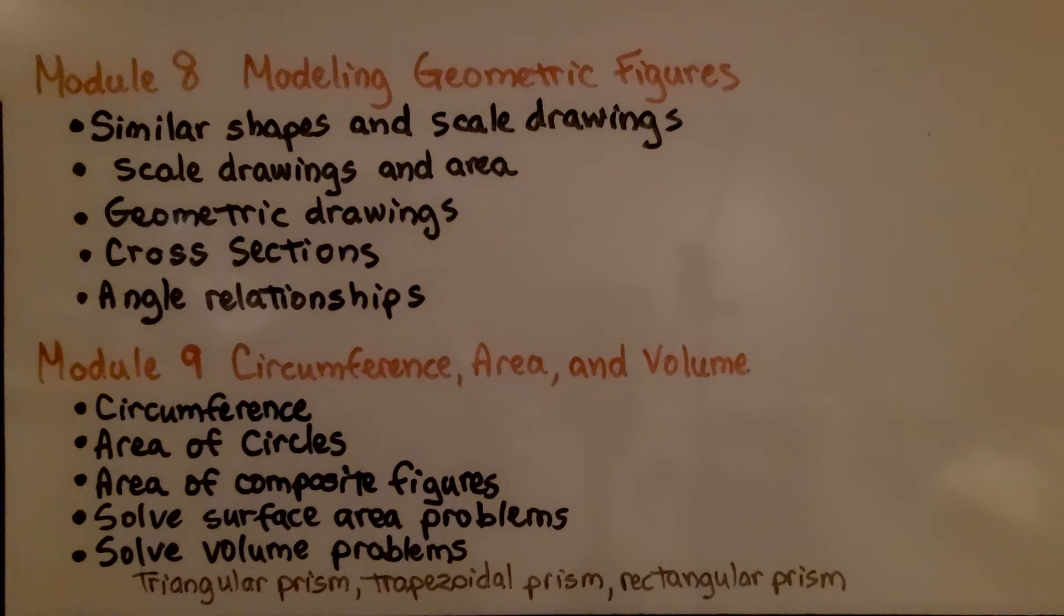In Module 9, we covered circumference, area and volume. We did circumference and area of circles, area of composite figures, and solved surface area problems and volume problems. We found the volume of a triangular prism, trapezoidal, or rectangular prism.